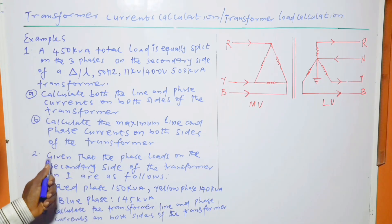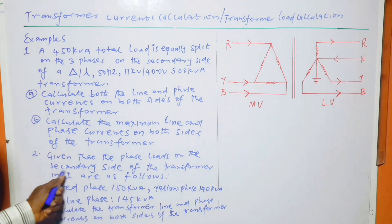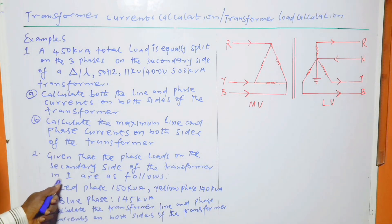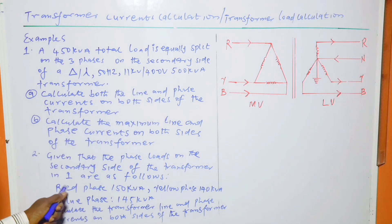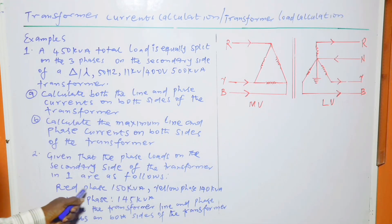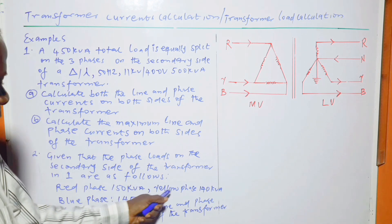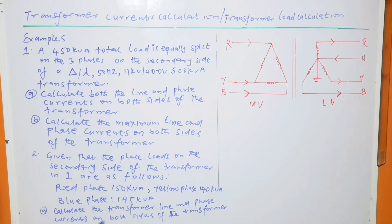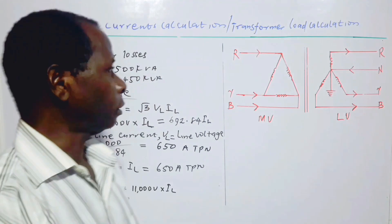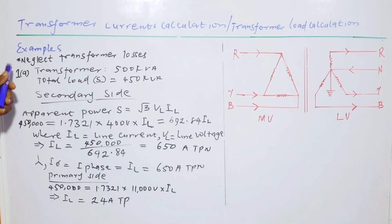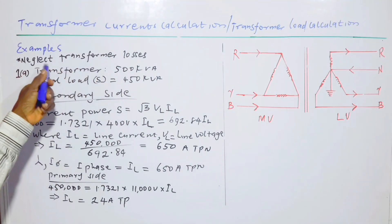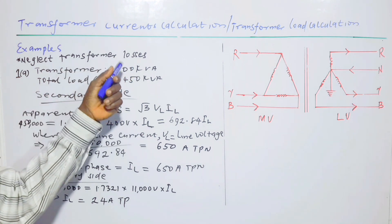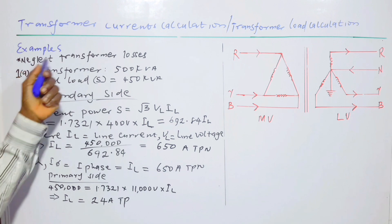Question two: given that the phase loads on the secondary side of the transformer in question one are as follows — red phase 150 kVA, yellow phase 140 kVA, blue phase 145 kVA — calculate the transformer line and phase currents on both sides of the transformer. Note that losses in the transformer should be neglected.